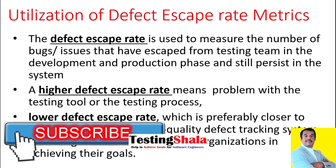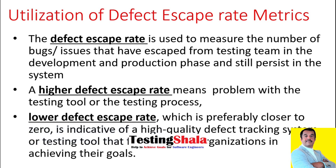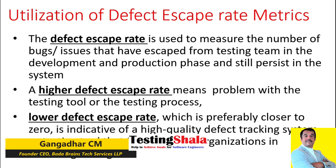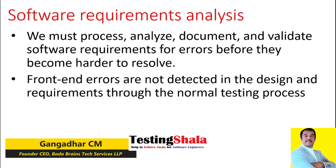If we use this metric very effectively, we can easily find out where the challenges are in terms of our overall testing processes or testing tools. When we have a higher defect escape rate, that means more defects are reaching production — indicating a problem with our testing tools or overall testing processes. When we have a lower defect escape rate, that means we have good testing processes, good defect tracking tools, and we are managing our overall goals very effectively.